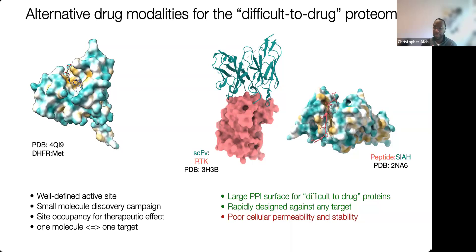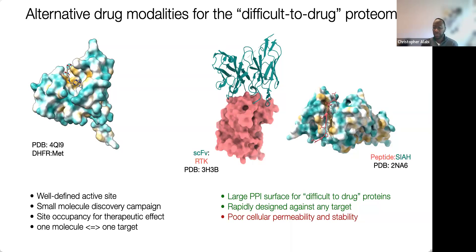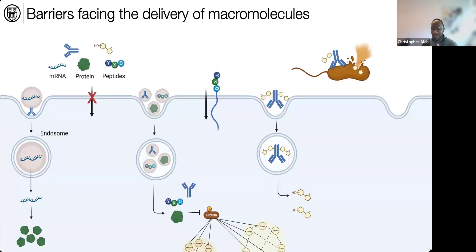The advantage of using proteins or peptides is that they can be rapidly designed against any target of interest by a variety of protein engineering techniques or display technologies — yeast display, phage display, mRNA display, for example. They're advantageous from that point of view, but the issue with these large biologics is that they have poor cell permeability. And when it comes to peptides, actually rather poor stability in serum. This is what our lab is largely interested in — the barriers facing the delivery of macromolecules.